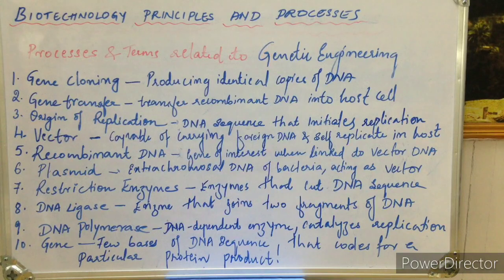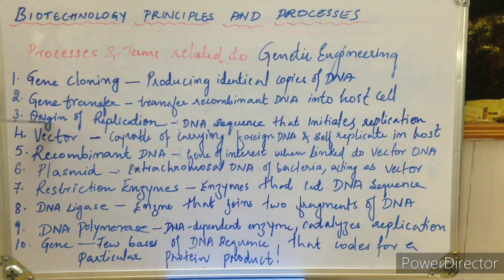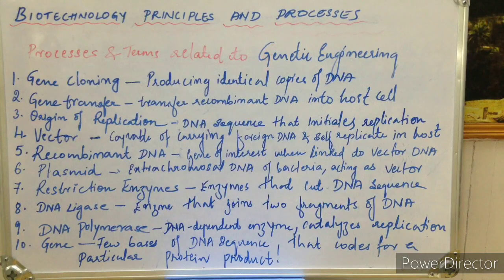When you want your gene of interest to get copied in the host organism, you link it to the vector DNA that has the origin of replication. Then it has the capacity to independently replicate in the host organism. The origin of replication is a specific DNA sequence in the chromosomal DNA that is responsible for the initiation of DNA replication.